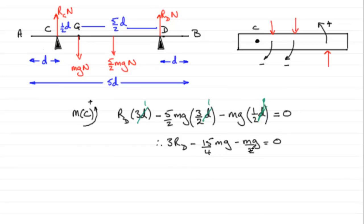And then minus a half mg, mg over 2, and that equals zero. So you've got 15 quarters here, this is a half, the same as two quarters. So minus 15 quarters minus another two quarters is going to be minus 17 quarters mg.